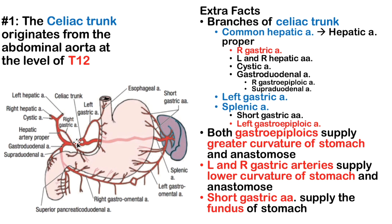To recap: the celiac trunk gives off three branches — the common hepatic, the left gastric artery, and the splenic artery. The left gastric supplies the lesser curvature on the left; the right gastric (from the hepatic artery proper, from the common hepatic) supplies the right lesser curvature. The greater curvature is supplied by the gastroepiploic arteries. The short gastric arteries supply the fundus of the stomach and also come from the splenic artery.